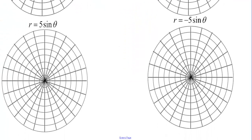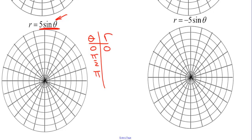For r equals 5 sine theta, this is a circle, but instead of going along the x-axis, we're going to go along the y-axis. At theta equals 0, sine is 0, so we start at 0. At pi over 2, sine of pi over 2 is 1, so 1 times 5 is 5. At pi, sine of pi is 0, so we're back to 0. We go from 0 up to 5 at pi over 2 — there's half the circle — and then we're back to 0 for the other half. Now we're along the positive y-axis, because on the unit circle, sine is y, and we have created the circle.